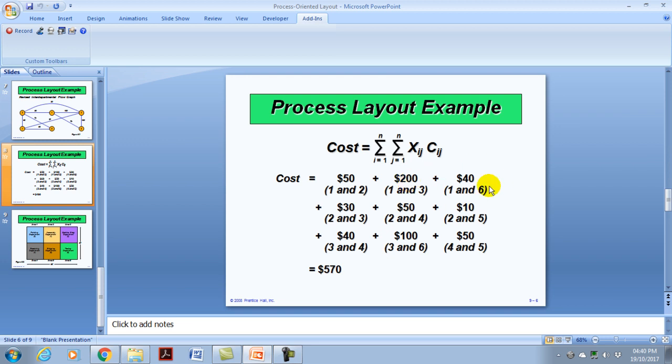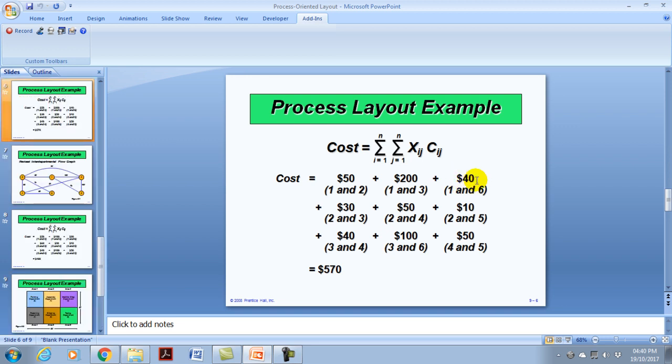And then between department one and six, again, the movement between department one and six had twenty loads. However, because they are far, they are not located close to each other, we'll have to multiply twenty multiply by two, which would give us forty dollars.